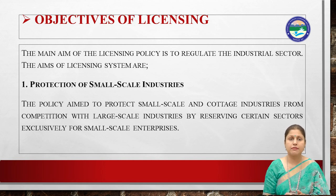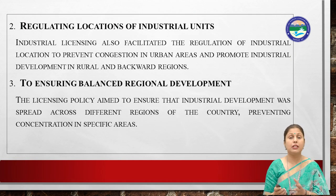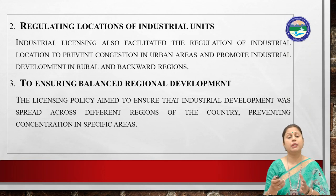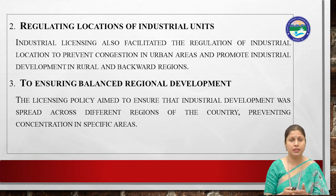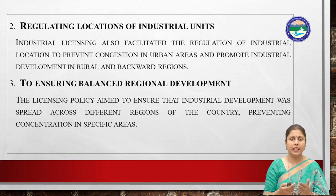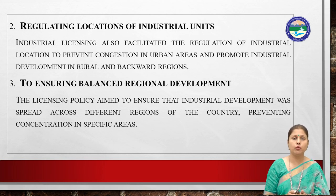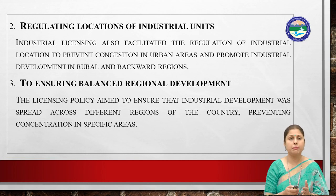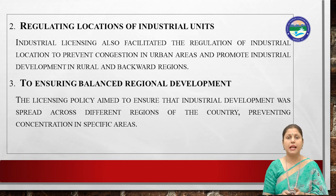The second objective was to regulate the location of industrial units — to ensure that industrialization was not limited to urban areas. The government provided incentives like water subsidies and electricity subsidies to promote industry in backward and rural regions. The third objective was to ensure balanced regional development across India.